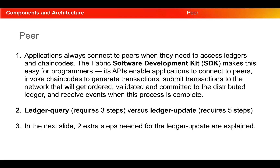The SDK's APIs enable applications to connect to peers, invoke chaincodes to generate transactions, submit transactions to the network that will get ordered, validated and committed to the distributed ledger, and receive events when this process is complete. This is how the application workflow works. We will see the communication that happens from application to peer, including the other ecosystem components, in the coming slides.